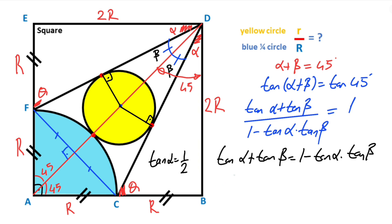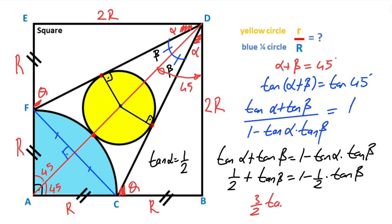So if we plug in this value to the equation: one half plus tan β equals 1 minus one half times tan β. So three over two times tan β equals one half. Therefore tangent beta equals one over three.